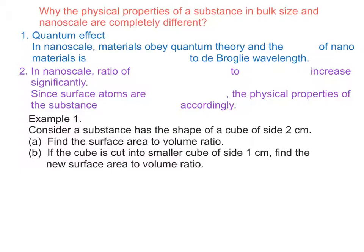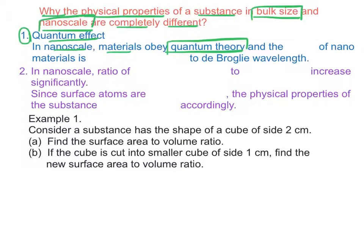Why the physical properties of a substance in bulk size and nanoscale size are completely different? There are two reasons. First, it's due to the quantum effect. In nanoscale, materials obey quantum theory and the size of nanomaterials is comparable to the Broglie wavelength.